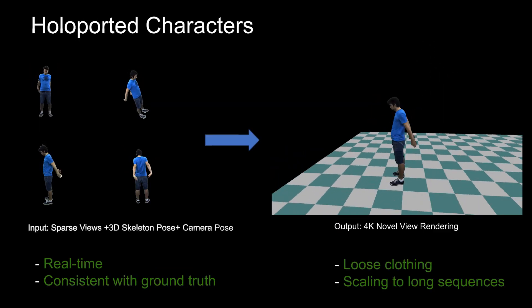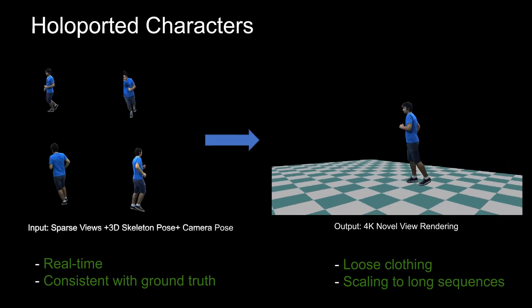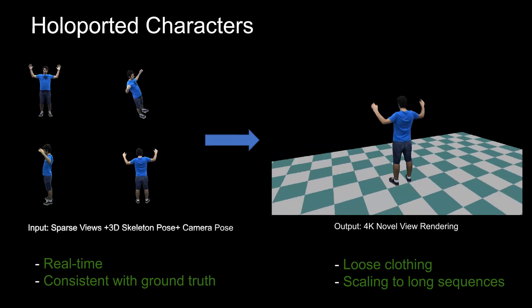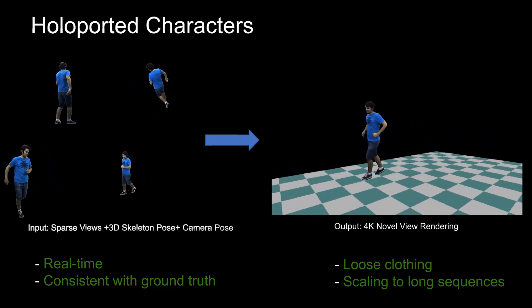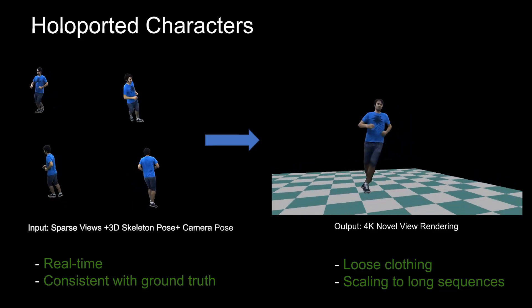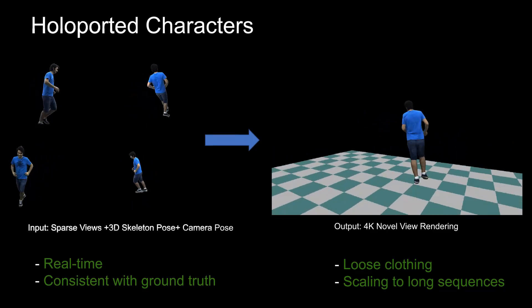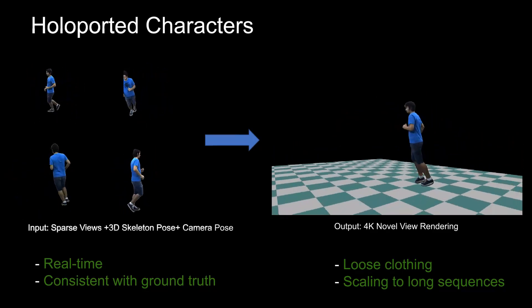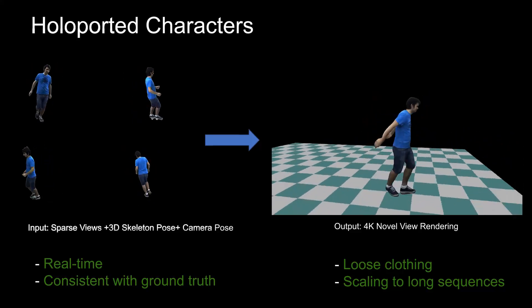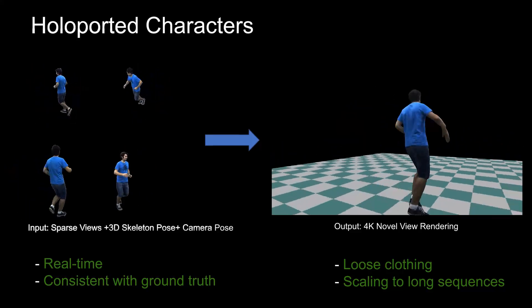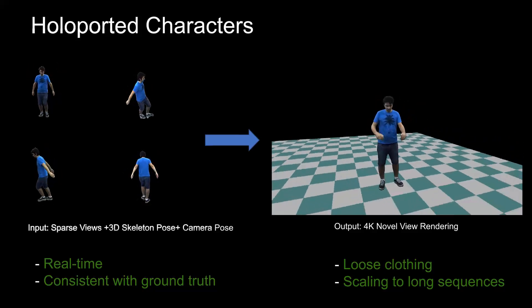To tackle those limitations, we propose Holoported Characters, which takes four sparse camera views and a skeletal motion as input and generates free viewpoint renderings at 4K resolution at real-time. Our approach further supports loose types of apparel and, in contrast to animatable representations, reproduces exact details such as face expressions and cloth wrinkles consistent with the input views.